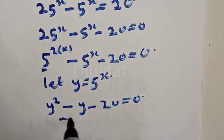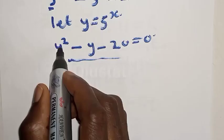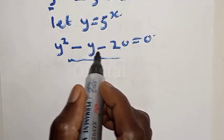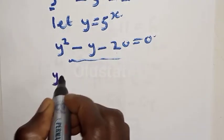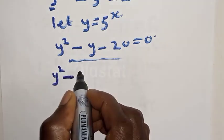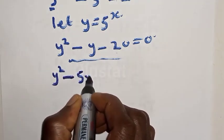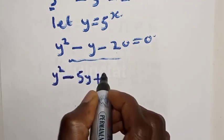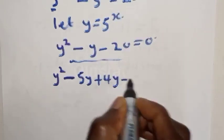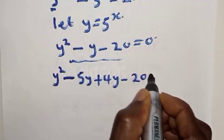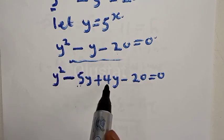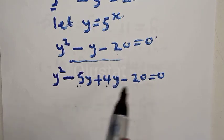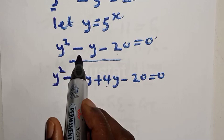This is now a quadratic equation. So let's solve: y squared minus y minus 20 is equal to 0. This can be expressed as y squared minus 5y plus 4y minus 20 is equal to 0. That is, minus 5 times 4 will give you minus 20, and minus 5 plus 4 will give you minus y.